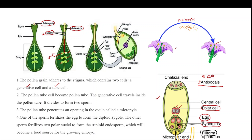Out of these two sperm cells, one sperm cell fuses with the egg cell to form a zygote. The egg cell is haploid (n) and the sperm is haploid (n), so the zygote is diploid (2n). This process is known as syngamy.